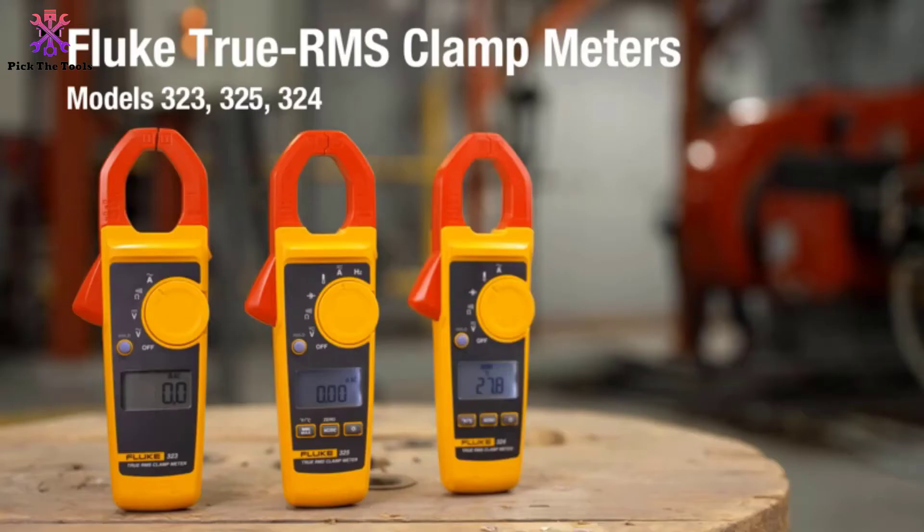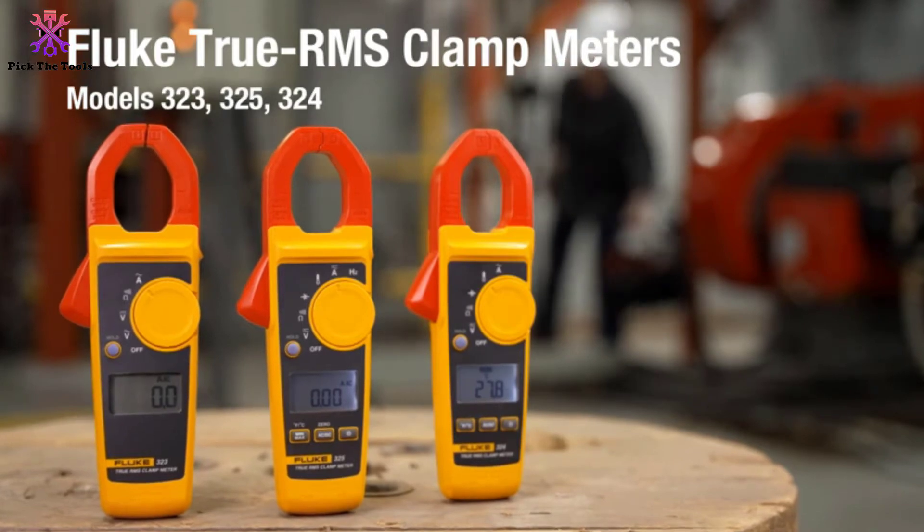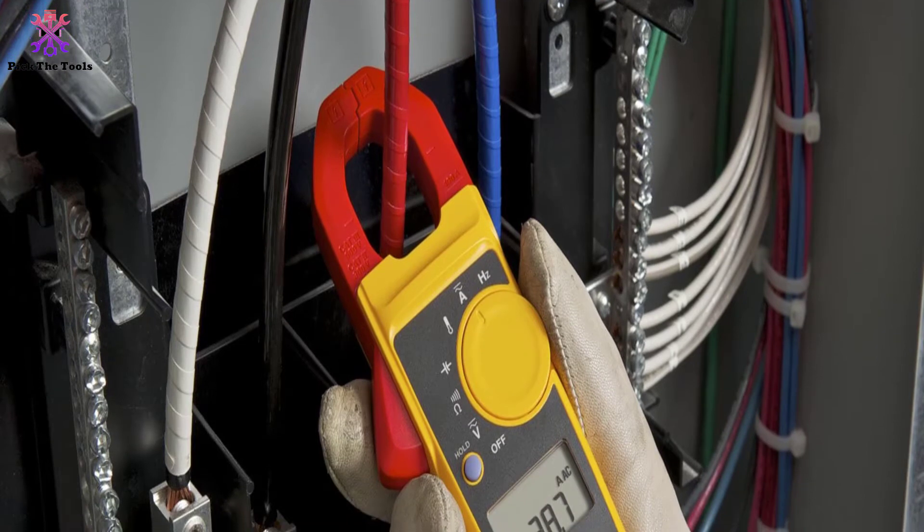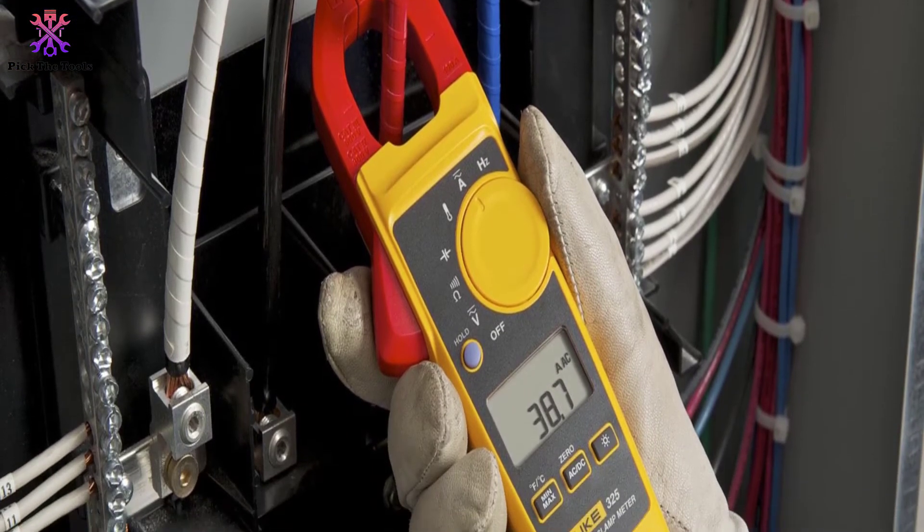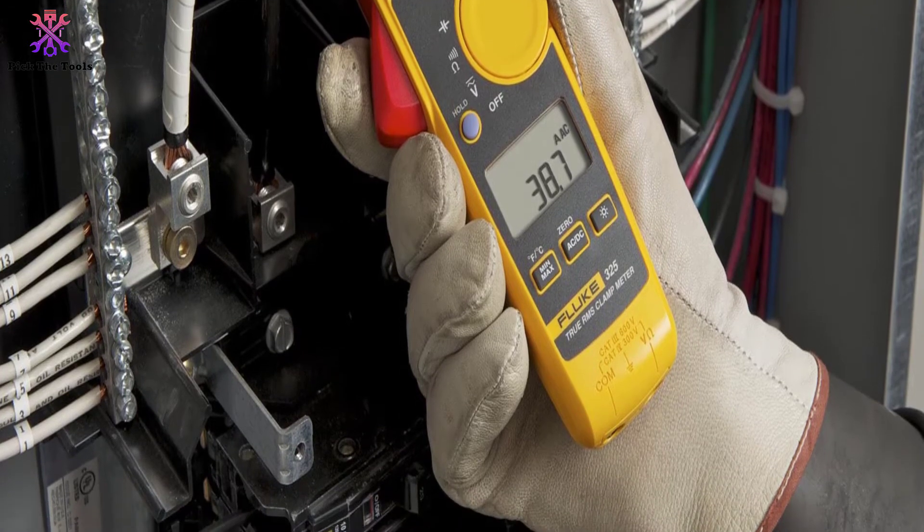This accurate RMS sensing meter is the top model of the 3XX series, which gives accurate readings when measuring linear or non-linear loads, regardless of waveform. It provides precise resistance, capacitance, and temperature readings for both commercial and household electricians.